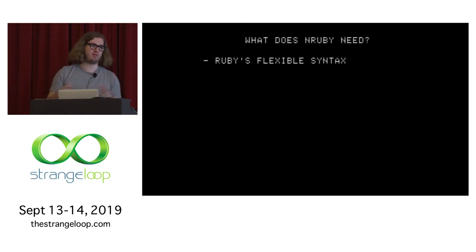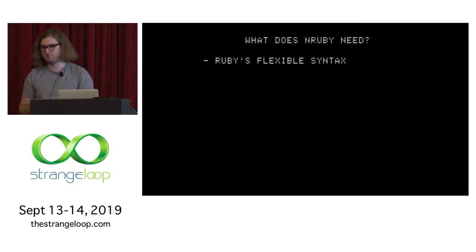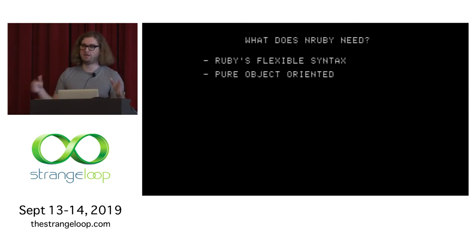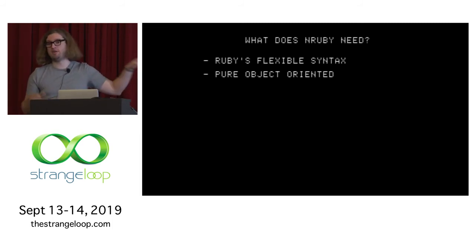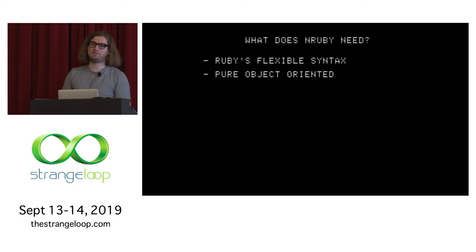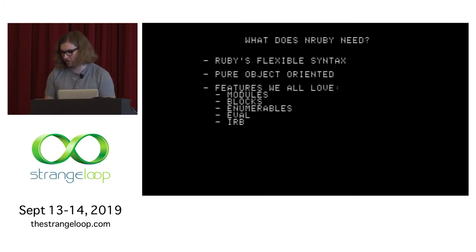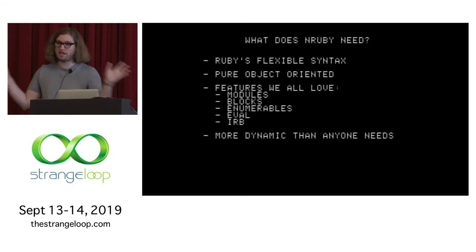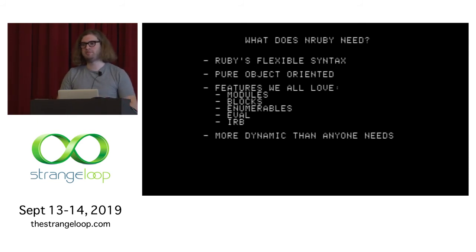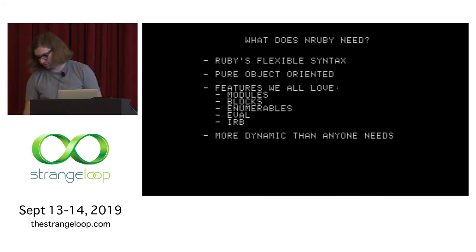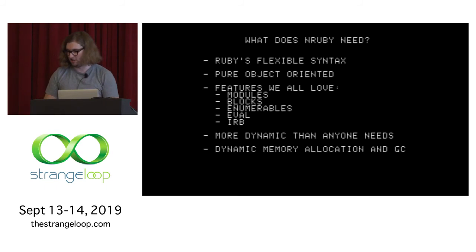So what does nRuby need? It needs Ruby's flexible syntax — having parentheses optional for function calls. It needs to be pure object-oriented: everything needs to be an object, which actually makes our jobs easier since we can create one object data type and specialize it slightly. It needs all the features we love: modules, blocks, enumerables, eval, IRB for an interactive way to program. It needs to be more dynamic than anyone needs — you need to be able to redefine everything. And it also needs dynamic memory allocation and a garbage collector.